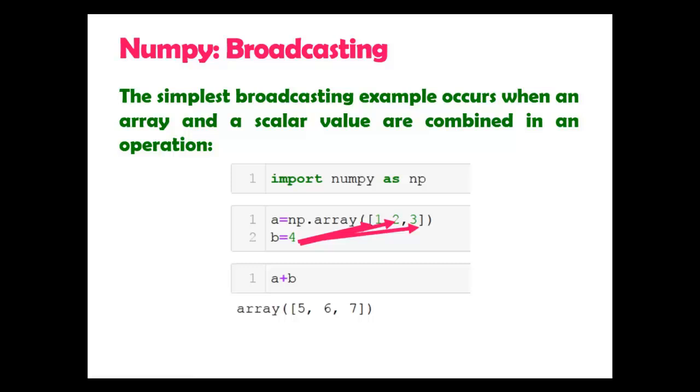So the result is equivalent to the previous example. You can see 4 plus 1 is 5, 4 plus 2 is 6, 4 plus 3 is 7. So the result is equivalent to the previous example where B was an array, but here we have used a scalar.